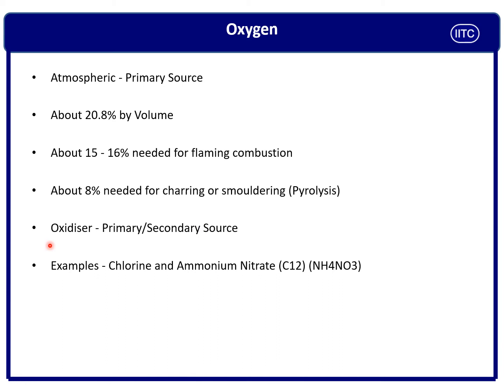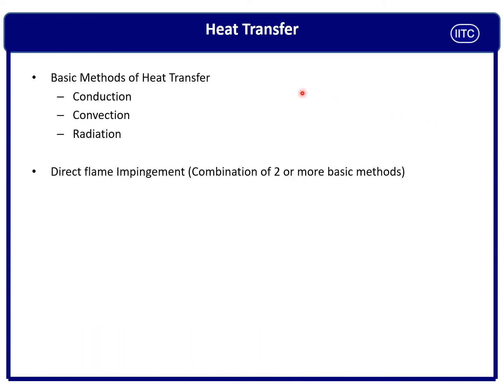There are some chemicals known as oxidizers — primary and secondary sources of oxygen. Examples include chlorine, ammonium nitrate, and similar chemicals. These are primary or secondary sources of oxidizers. Understanding heat transfer is important because heat transfer is why there is a chance of fire propagation.